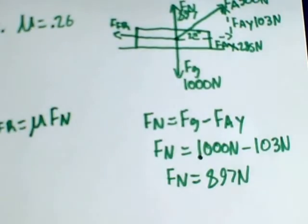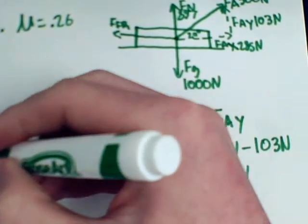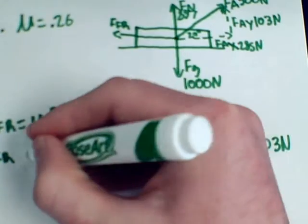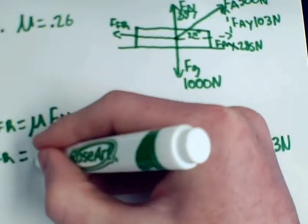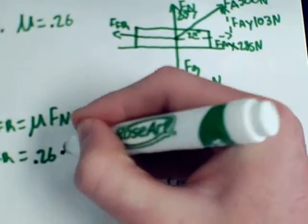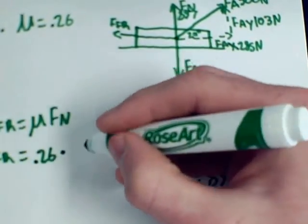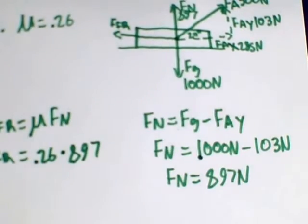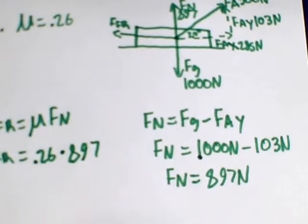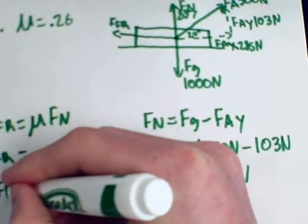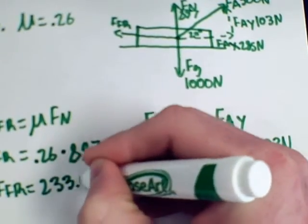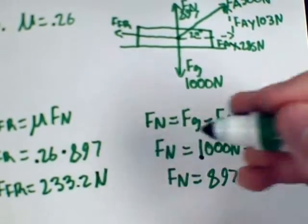Previously in part A, the force of friction was found by assuming equilibrium, but that is not the case here. So the force of friction equals mu multiplied by the normal force: 0.26 multiplied by 897 N. Doing this correctly, we should come out with 233.2 N.